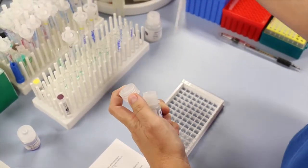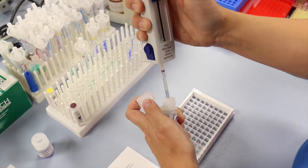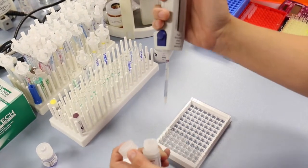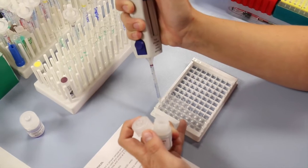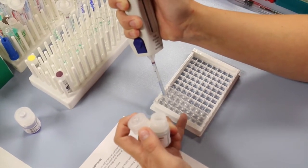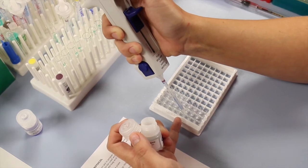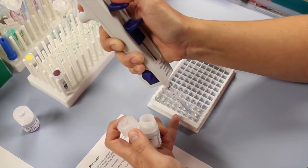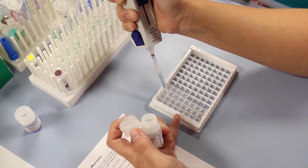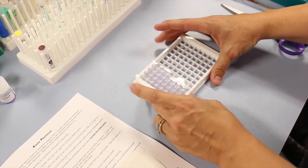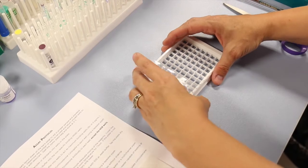To add the assay specific reagents, the conjugate and the antibody, use a repeater pipette. Use a clean repeater pipette tip for each assay specific reagent. Add the assay specific reagents and ensure that you do not splash during that addition. Tap the side of the plate to gently mix.